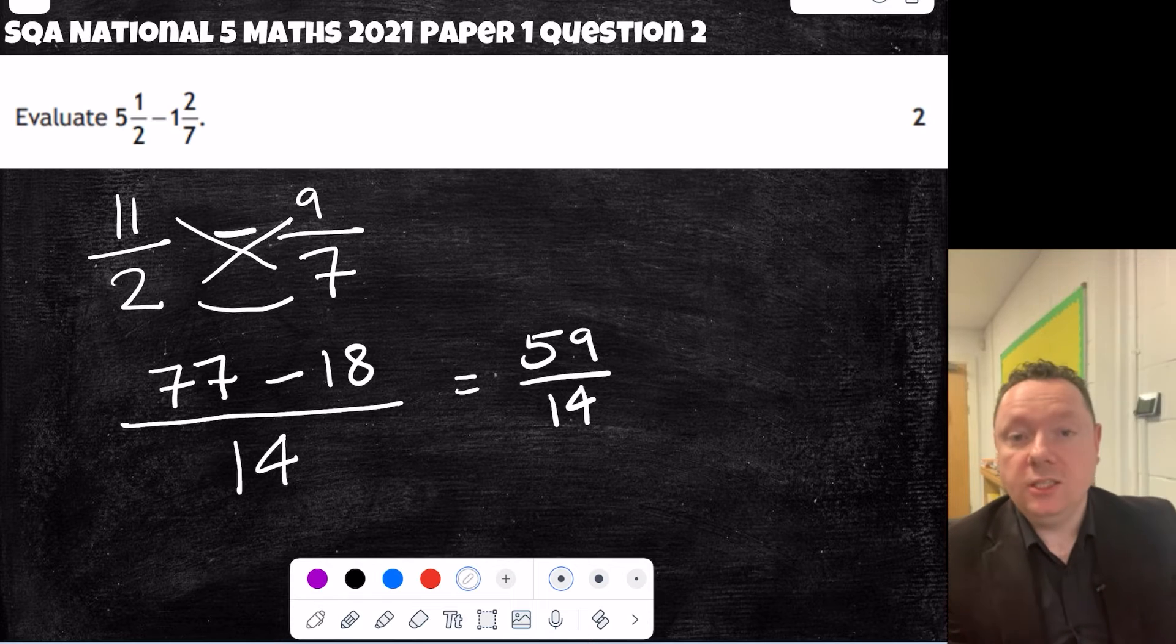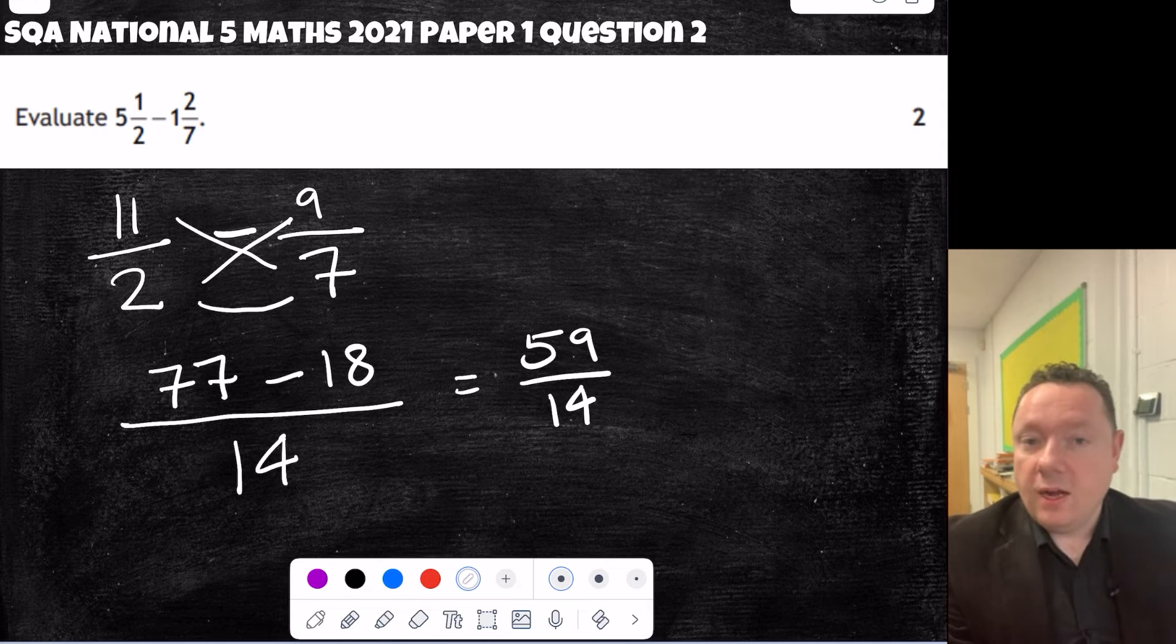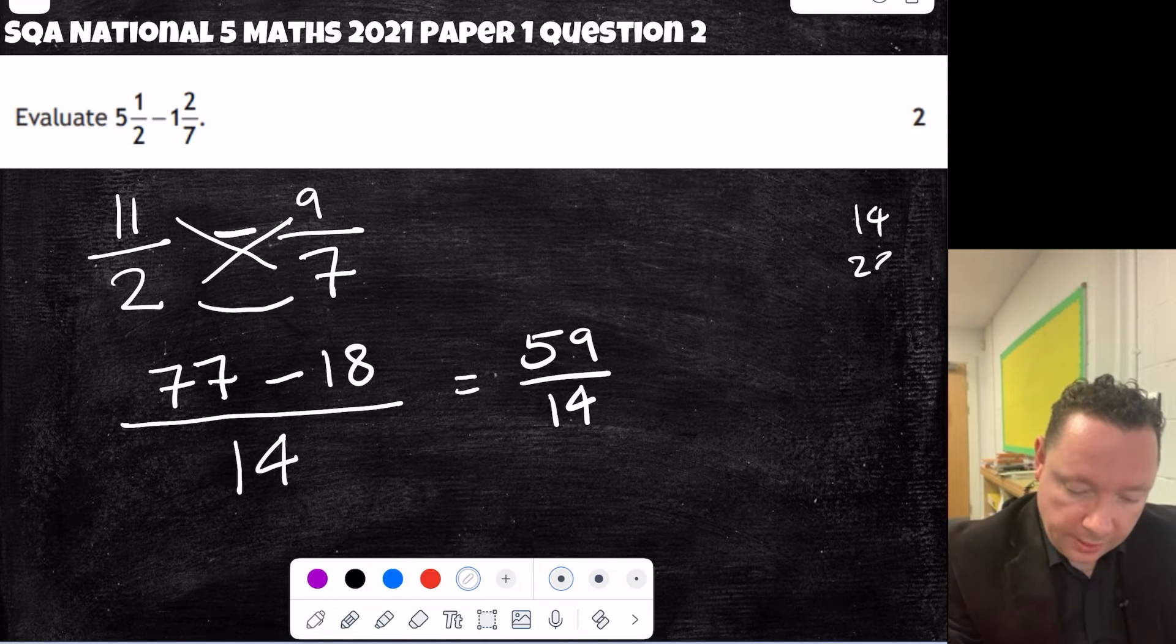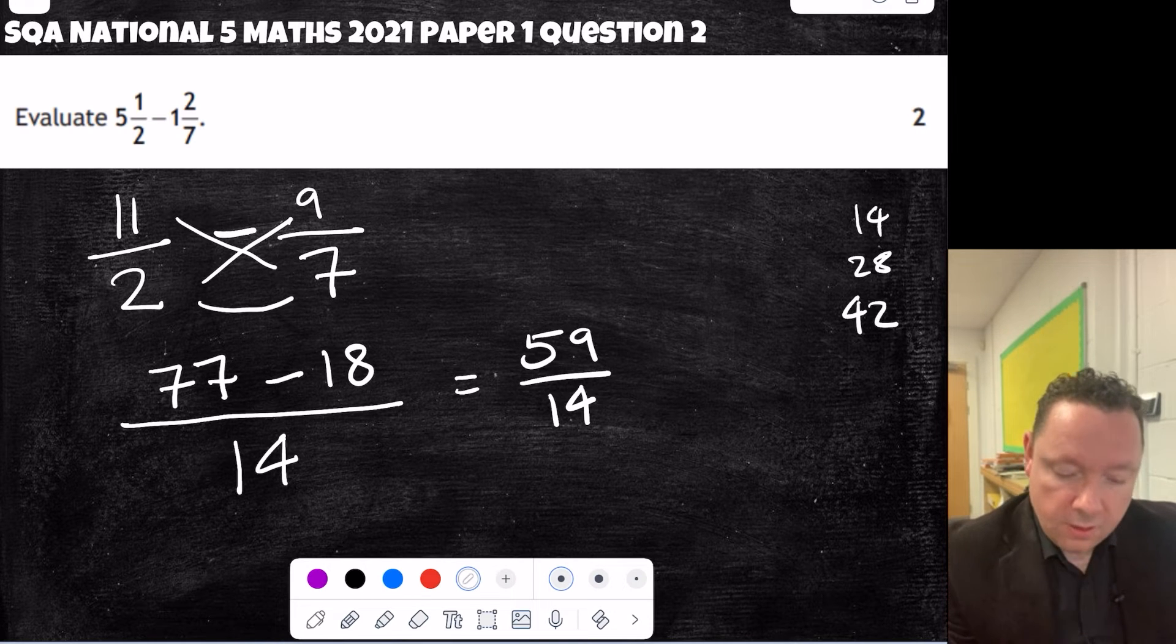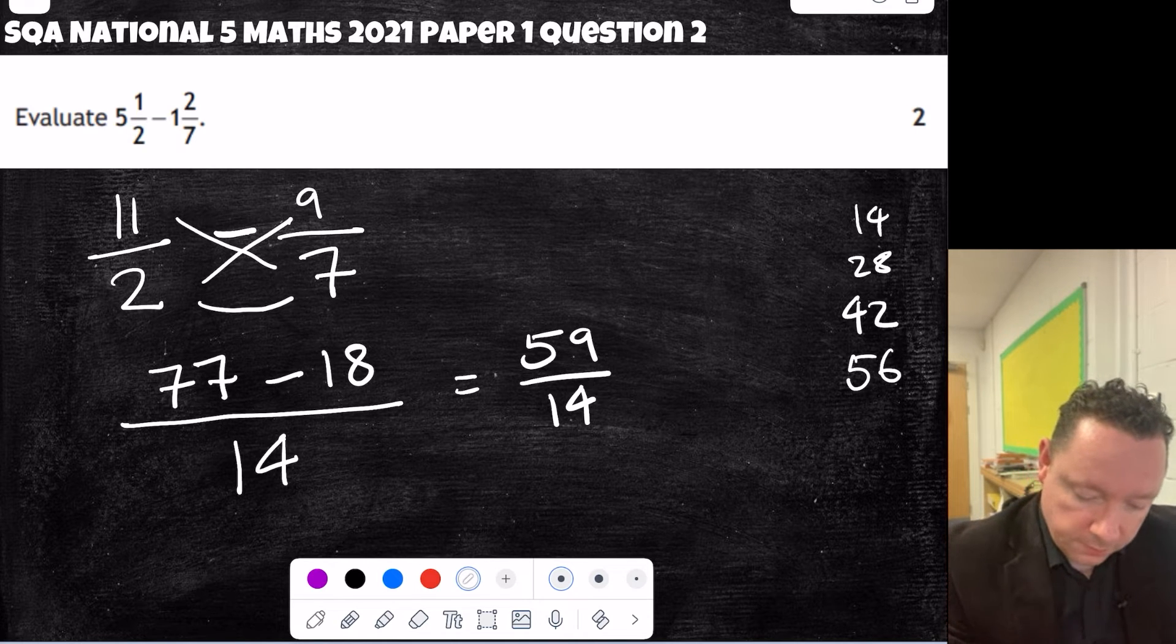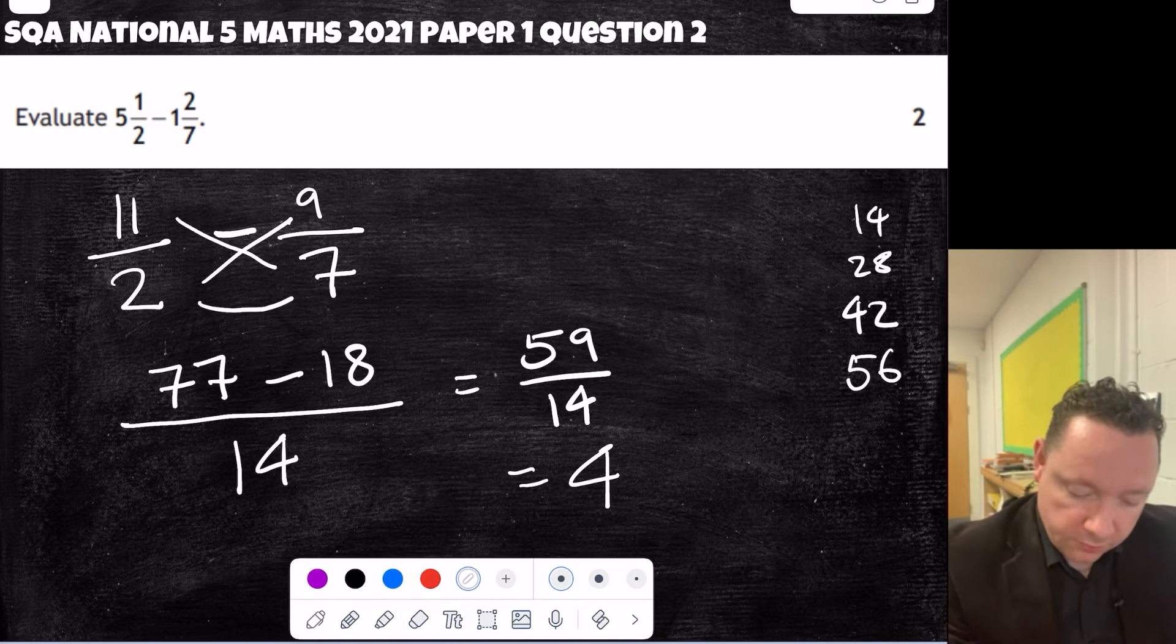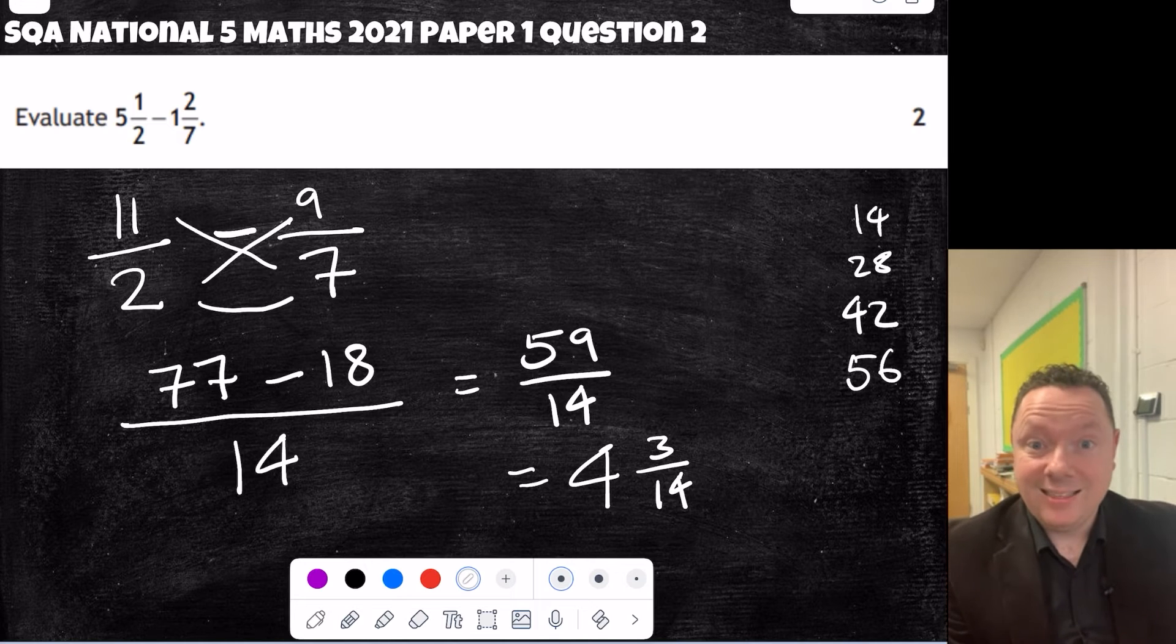Now, at this point, you can just convert it back to a mixed number or simplify the fraction. So I'm just going to count in 14s. 14, 28, 42, 56. So that is 1, 2, 3, 4. And I've clearly got 56, 3 left over, 3 fourteenths. Just check that 3 fourteenths has simplified, and it is. So I'm done there.